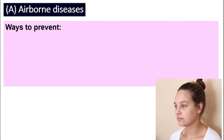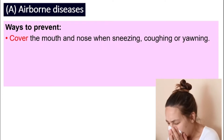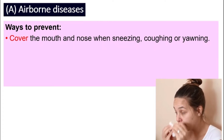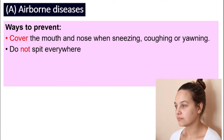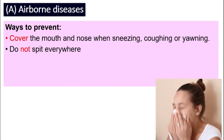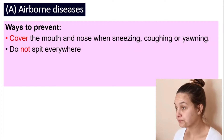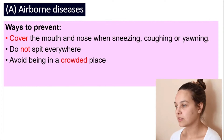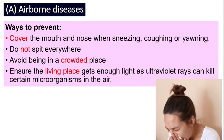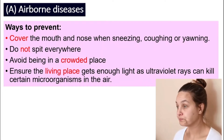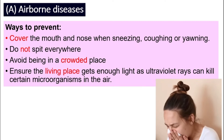How can we prevent airborne diseases? Number one, when you sneeze, cough, or yawn, close your mouth and nose, especially if you're sick. Do not spit everywhere — it is very unhygienic and can cause diseases to spread. Avoid being in crowded places, and ensure that your living place gets enough sunlight, because the ultraviolet rays in sunlight can actually kill certain types of microorganisms in the air.